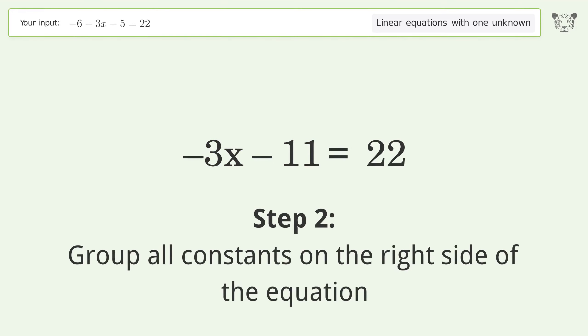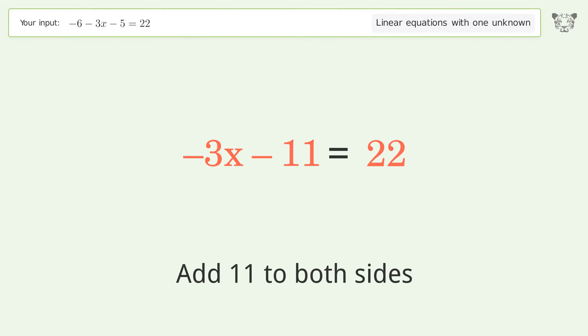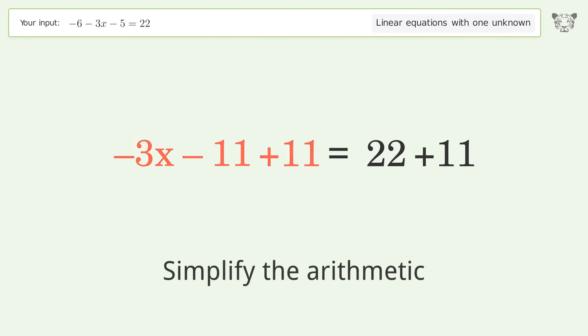Group all constants on the right side of the equation. Add 11 to both sides. Simplify the arithmetic.